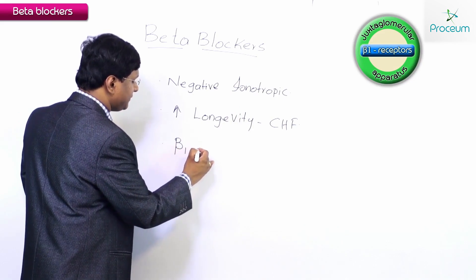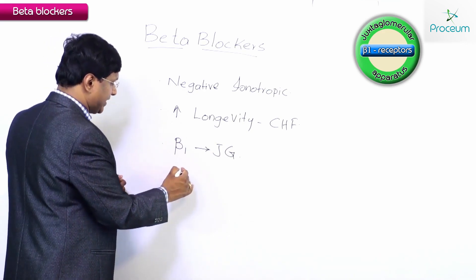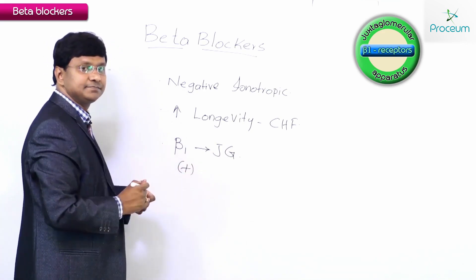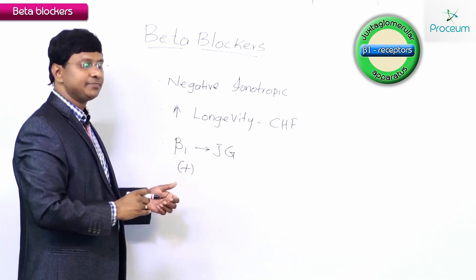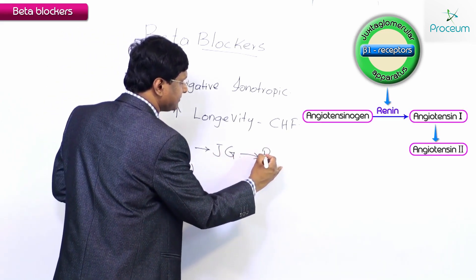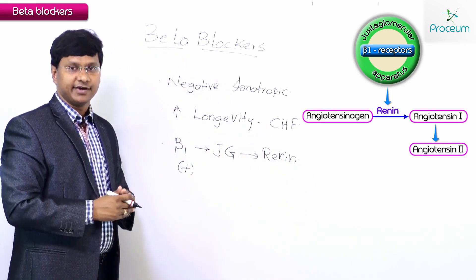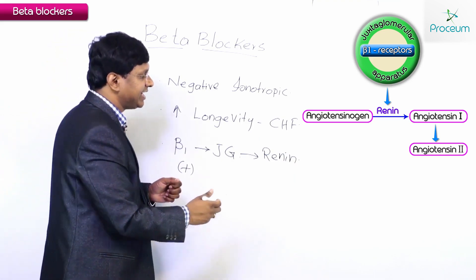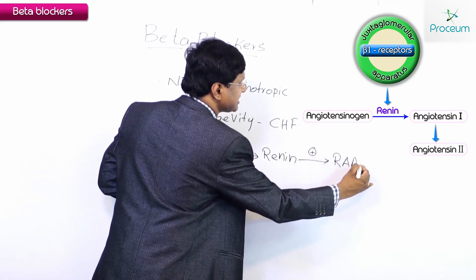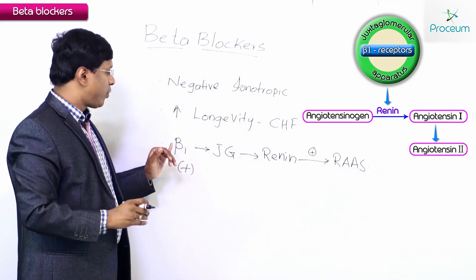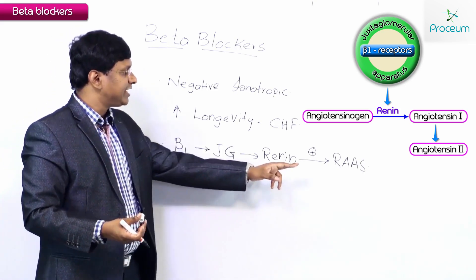When the beta 1 receptors in the JG apparatus are stimulated, they will cause the release of renin. This renin will then stimulate the renin-angiotensin-aldosterone system. When beta 1 receptors are stimulated, the product we get is from the renin-angiotensin-aldosterone system.